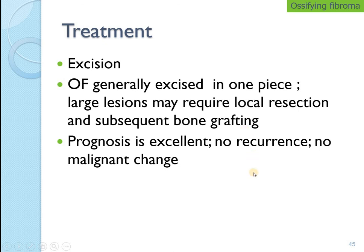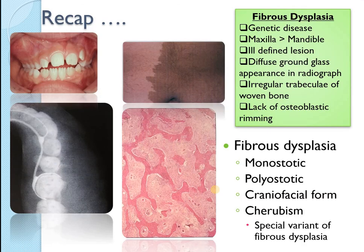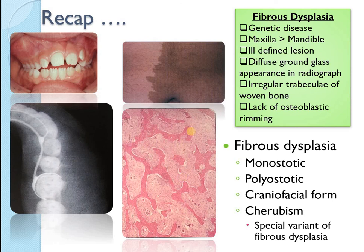Prognosis for ossifying fibroma is excellent, with no recurrence or malignant transformation. Fibrous dysplasia has a 0.4 to 1% malignant transformation rate. Quick recap: fibrous dysplasia is a genetic disease; maxilla is more commonly involved; it is an ill-defined lesion giving a ground glass appearance; irregular trabeculae of woven bone lacking osteoblastic rimming are seen. Fibrous dysplasia has monoostotic, polyostotic, and craniofacial forms, and there is a special variant called cherubism.